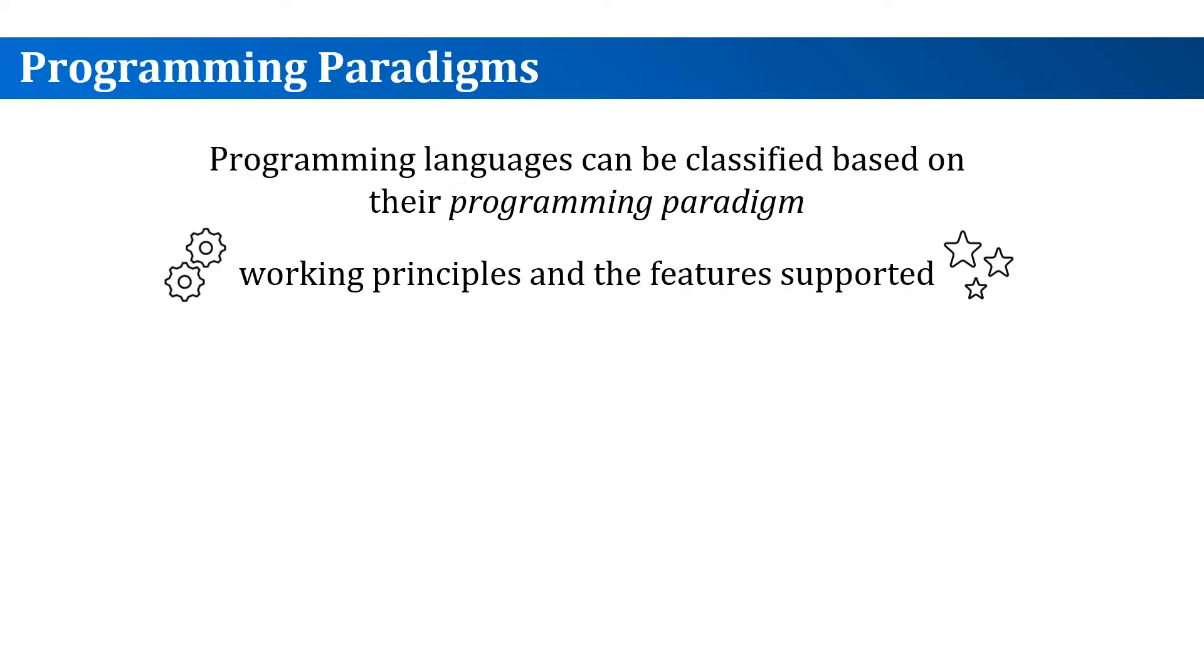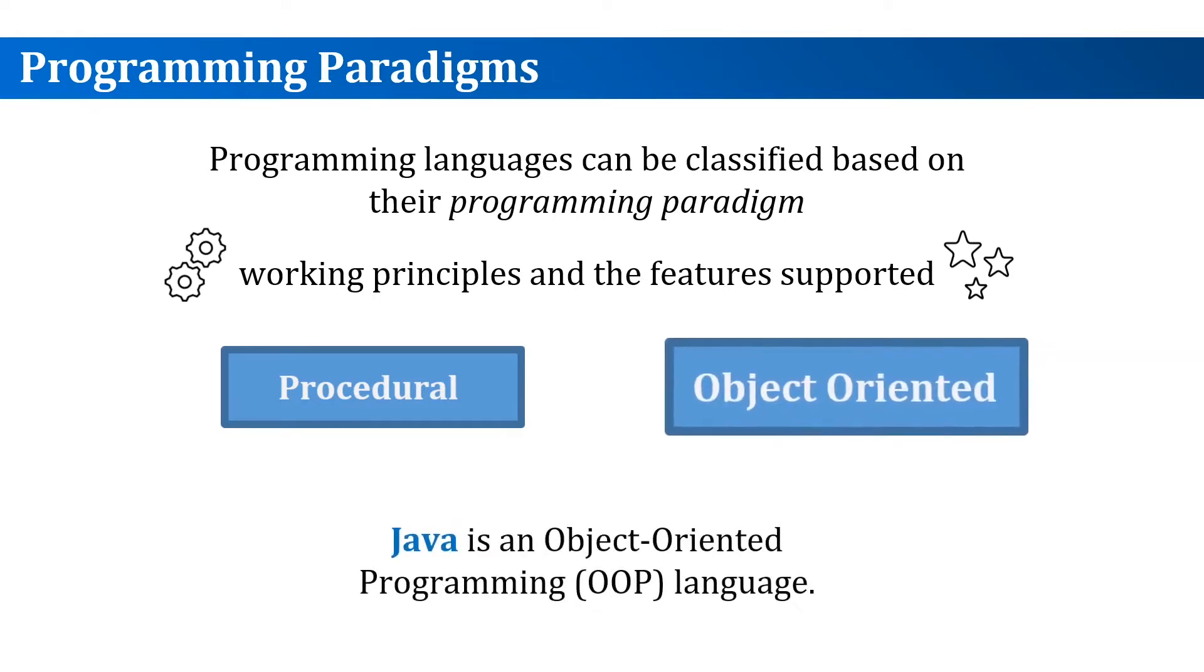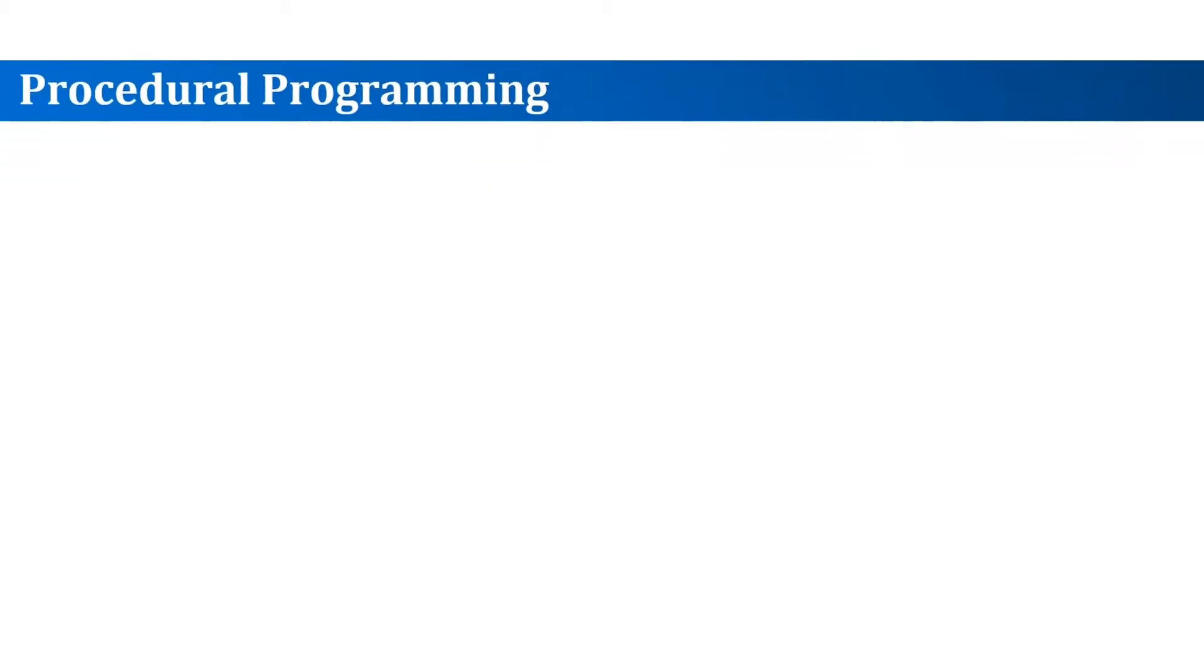We will discuss two major programming paradigms: procedural programming and object-oriented programming or OOP. Java, the language we will use for this course, is an object-oriented programming language. To better understand the OOP paradigm, let's first briefly discuss procedural programming. It will help us understand the limitations of procedural programming and motivations for the use of OOP.